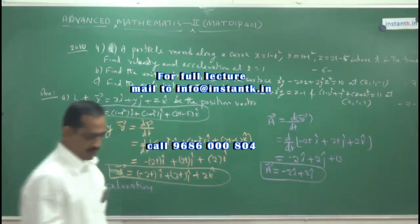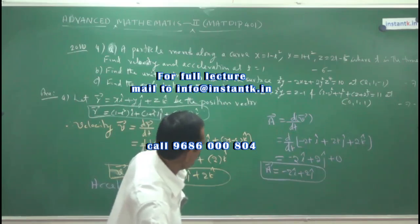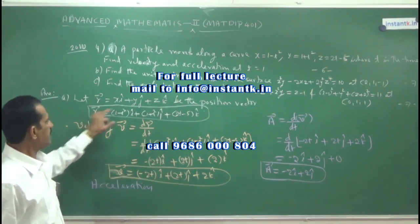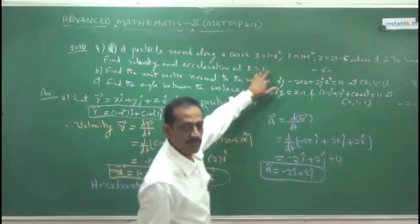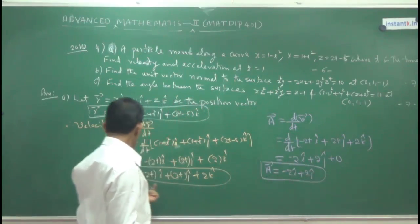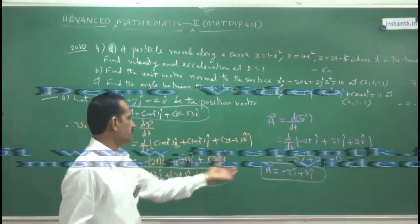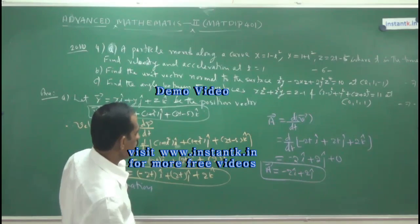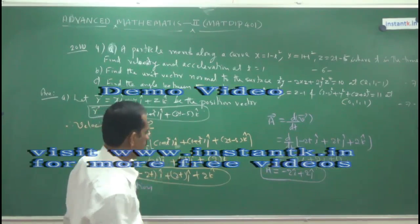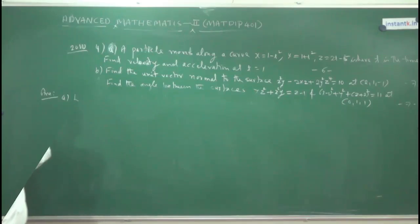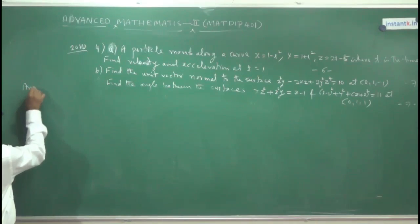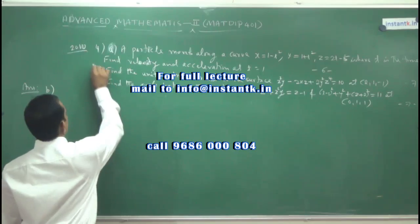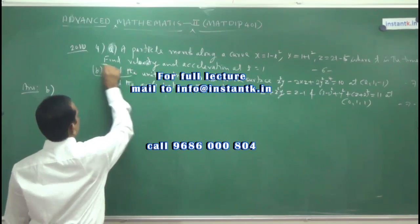The question also asks: find velocity and acceleration at t = 1. Now substitute t = 1 into the velocity and acceleration expressions. That will give the answer at that point. Next, part (b) of the question asks: find the unit normal to the given surface at a given point.